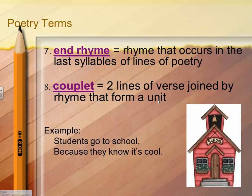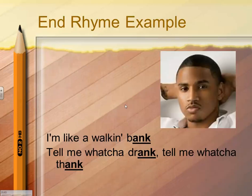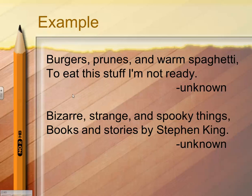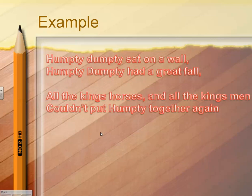It's important in couplets that they share the same idea or are connected in some way. You don't want one line talking about French class and the next talking about space — that would be disjointed and not a true couplet. If they're late to class, they must have a pass — that's another example. Some end rhyme examples in an R&B song: I'm like a walking bank, tell me what you drank, tell me what you think. Here's a more traditional example in Robert Frost's Dust of Snow.